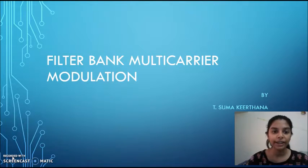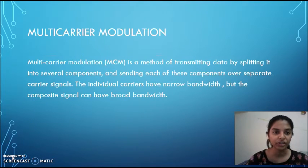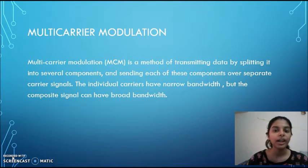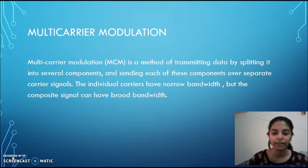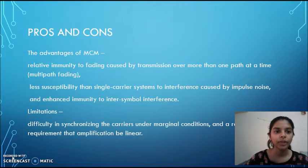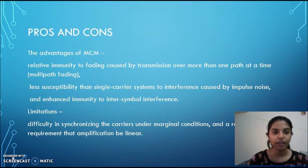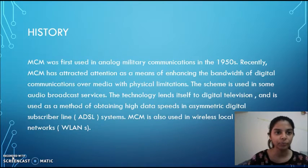Filter bank multicarrier modulation. Multicarrier modulation is a method of transmitting data by splitting it into several components and sending each of these components over separate carrier signals. During data transmission, frequency selective fading will cause distortion of the signal. To prevent this, we can use multicarrier modulation.